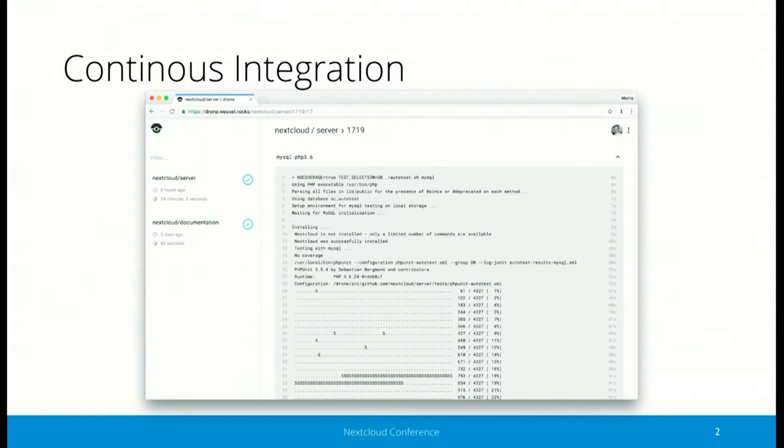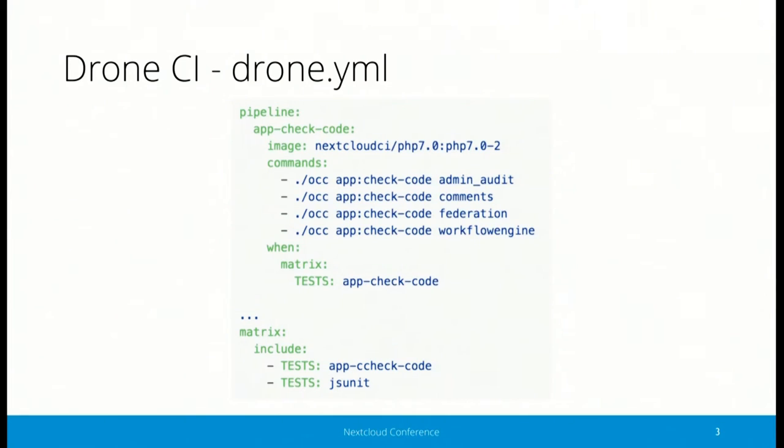You see, for example, the pull request number on the top and then the log output of the test run. Here you see the software Drone, because it was just too much work to set up Jenkins and I looked for an alternative that's easier to configure, and especially to have the configuration not on the server but actually in the Git repository where all the developers work and add new automated tests. This is specified in a .drone.yaml file and that looks like this here.